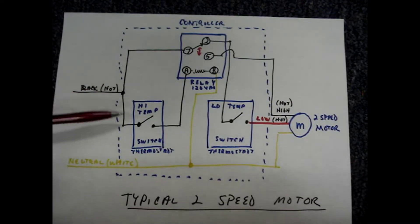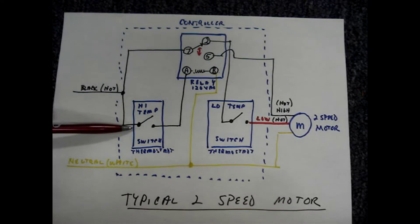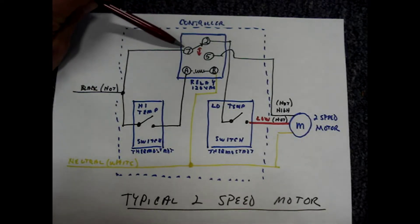The black wire feeds into the controller and terminates on one side of the high temperature switch. It also terminates on the common contact of the relay, pin 7.